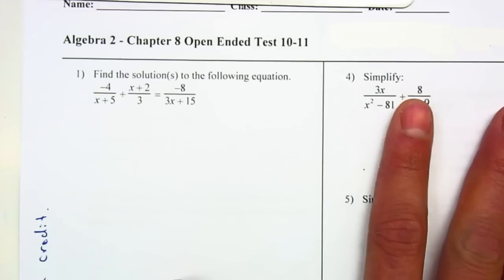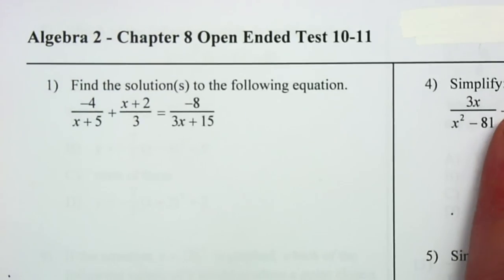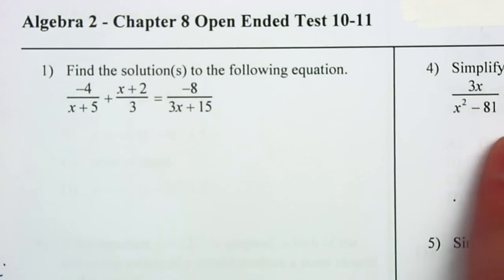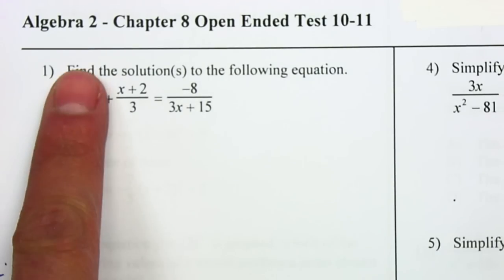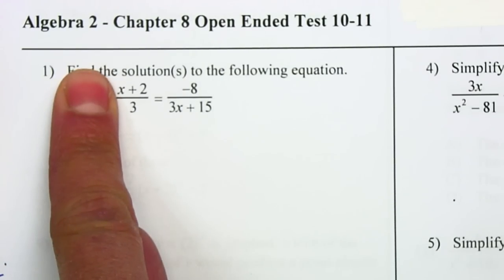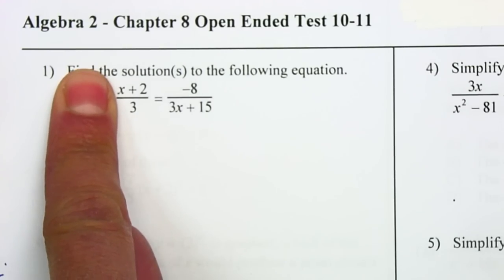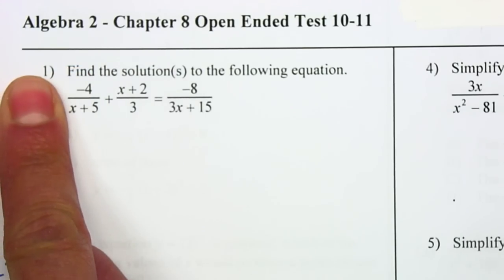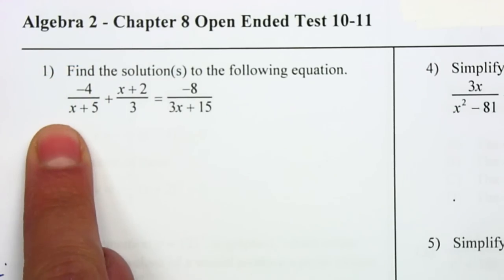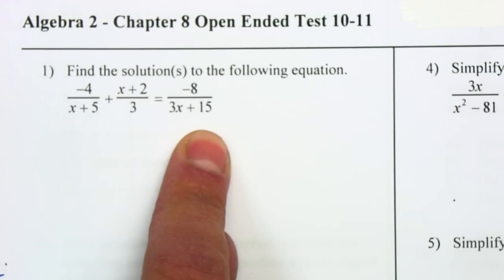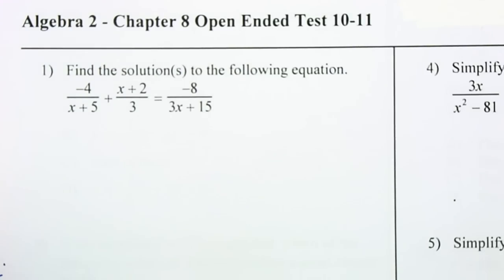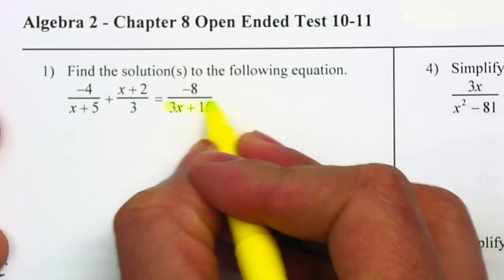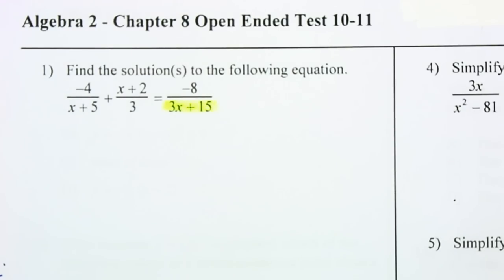Let's start with number 1. We have an equation. Remember that sometimes you are able to cross-multiply — if we just have (x + 2)/3 equal to -8/(3x + 15), then we could cross-multiply. But because we have two fractions on the left-hand side that are adding, we want to cancel the denominator. That'll be the easiest way to solve this equation. First, factor the denominators.